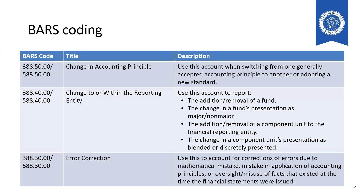The prior period adjustment code is being retired and separated into three new BARS codes: one for change in accounting principle, one for change to or within the reporting entity, and one for error correction. You may notice that change in accounting estimate is not included in the new codes — that's because changes in accounting estimates are applied prospectively in the period the change occurred, so no new BARS code is required for those situations.